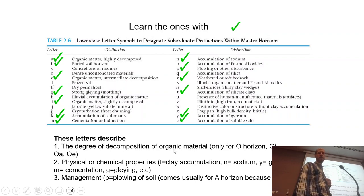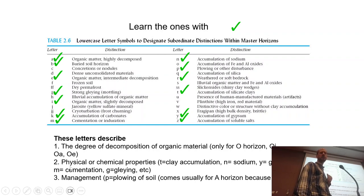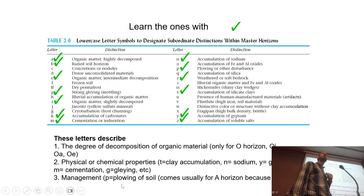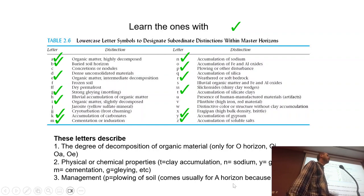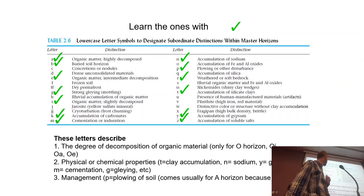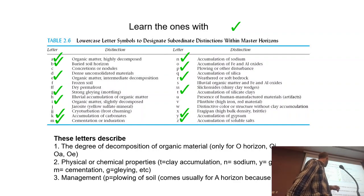Some examples of subordinate letter designations: T for clay, N for sodium, Y for gypsum, M for cementation, G for gleying. We also have subordinate horizons denoting how we use soils or how humans have changed them — for example, P for plowing, usually applied to the A horizon. Plowing means mixing of the top layers of the soil. If the A horizon is homogenous in the first 15-20 centimeters, you can call it an AP horizon.